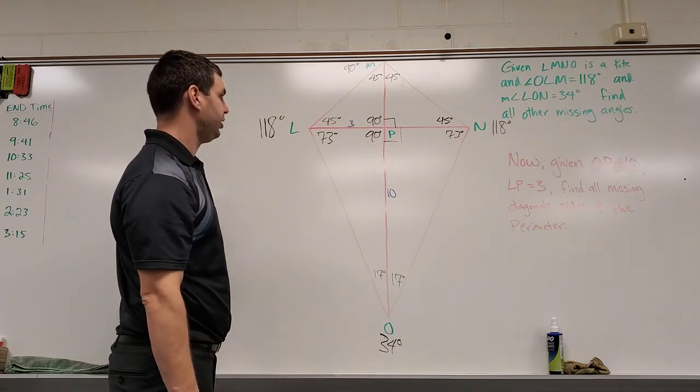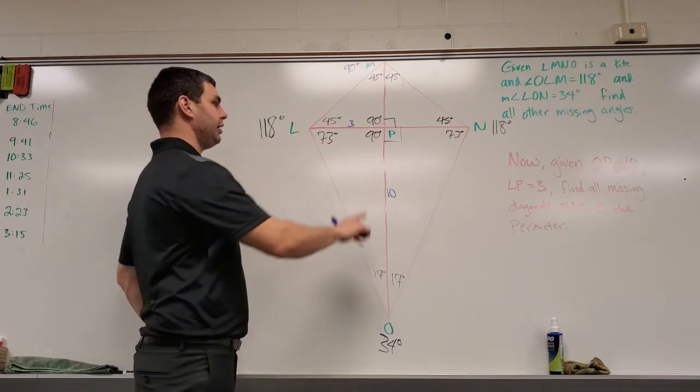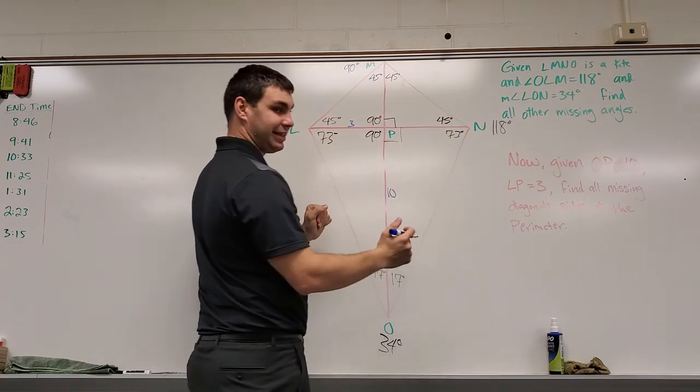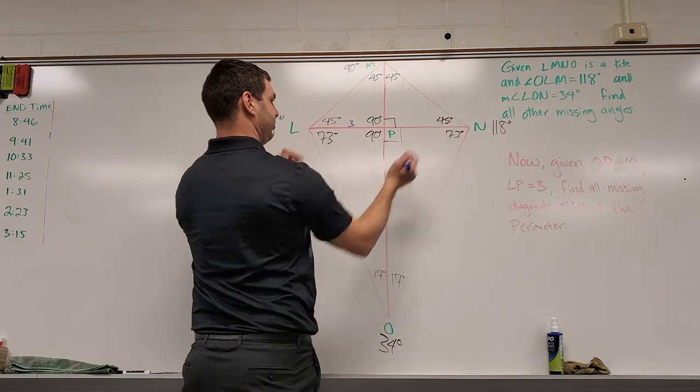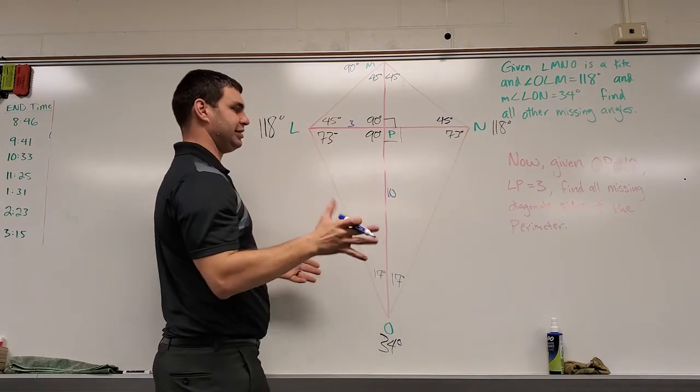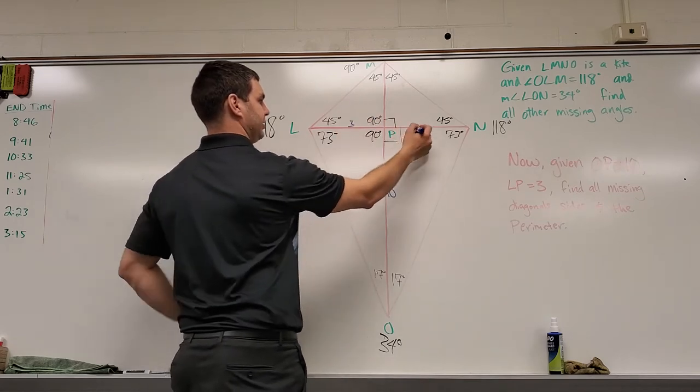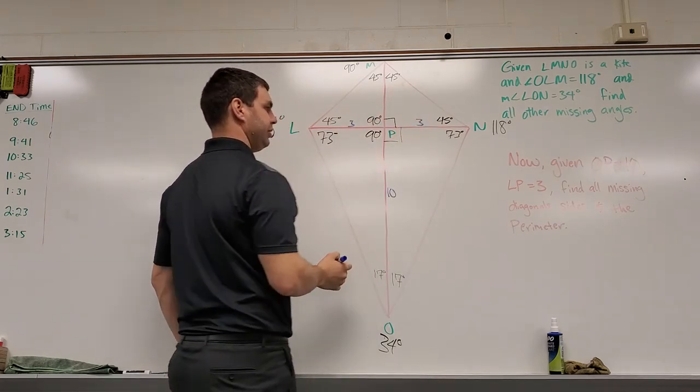First things first, I'm seeing right off the bat that if this is 3, that cut in a kite, this diagonal is cut perfectly, the short diagonal, not necessarily always the short one, but the one that is being bisected. So this is going to be 3, and this is going to be 3.